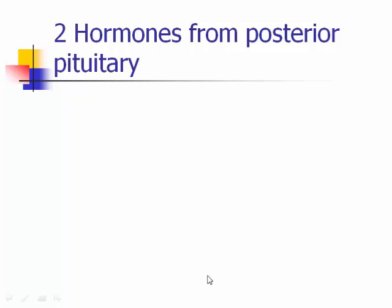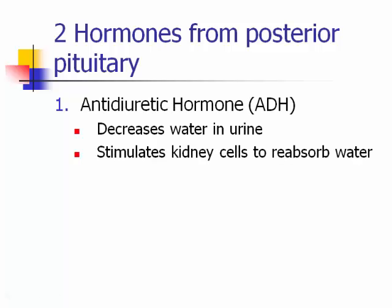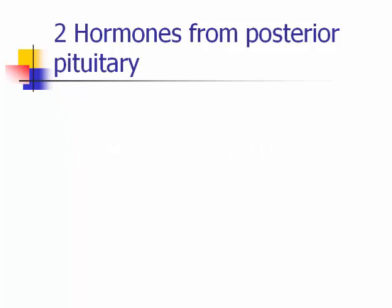The two hormones from the posterior pituitary are anti-diuretic hormone (ADH) and oxytocin. What does a diuretic do? It makes you increase urine output — makes you pee. So what does an anti-diuretic do? It decreases urine volume. And if urine volume goes down, blood volume goes up. Blood will be a big part of several upcoming lectures.